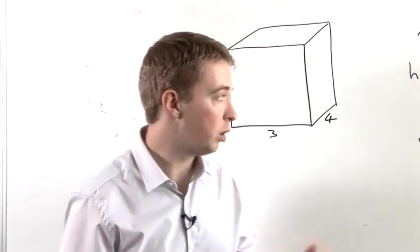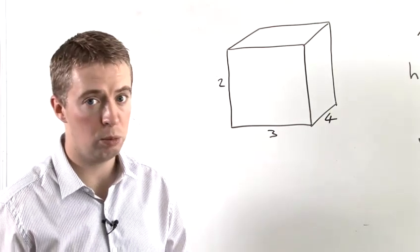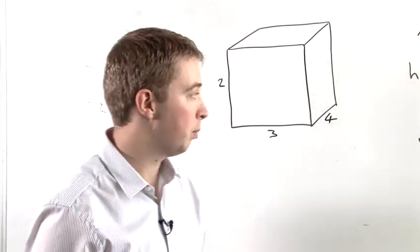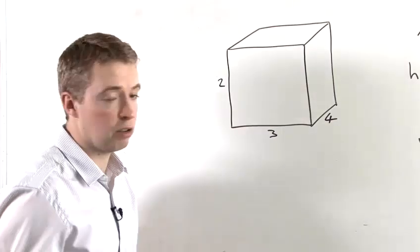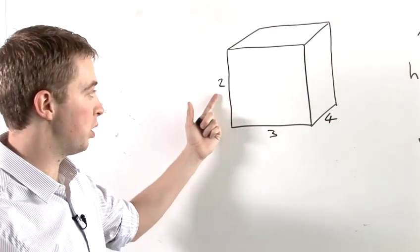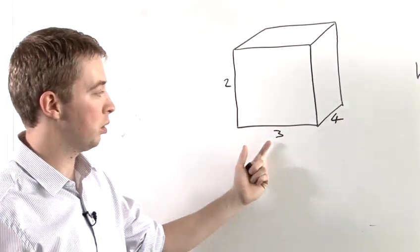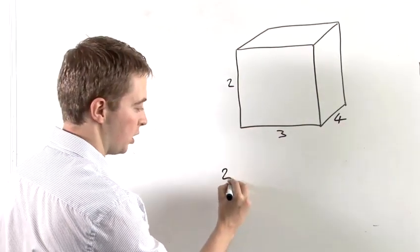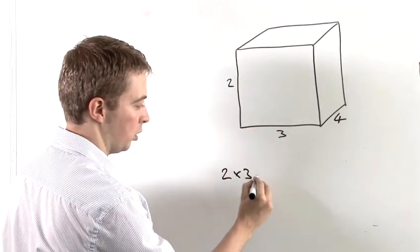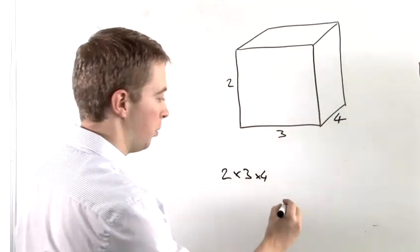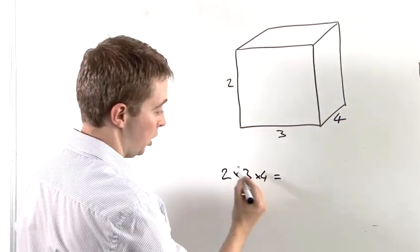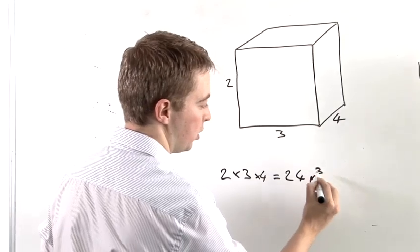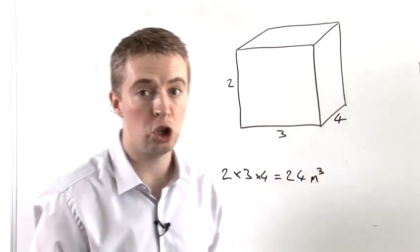So to start with, we're taking a cube, which is probably the most simple shape for which you can work out the volume. It's very straightforward. We're going to take the height of that cube times its width times its depth. So in this case, that is 2 times 3 times 4, which is 24. And if it's in metres, then the units would be metres cubed.